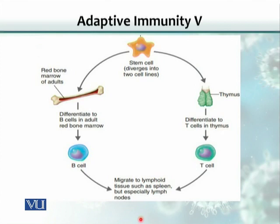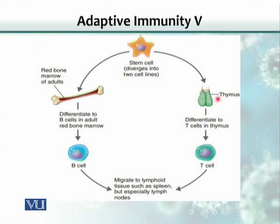If you look at the origin of the cells of the immune response, there is a stem cell that gives rise to B cells and also T cells. B cells remain in the bone marrow for their development until they mature, and then they migrate to various lymphoid organs like lymph nodes and spleen. T cells originate in the bone marrow and then go for their development and maturity into a body structure called the thymus, where they differentiate and mature into T cells, and then migrate to lymphoid organs like lymph nodes and spleen.